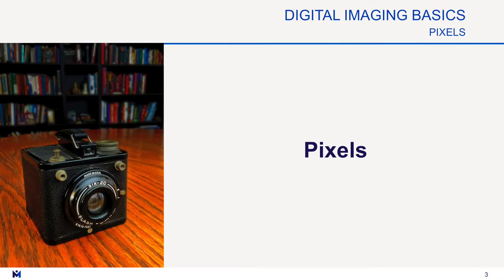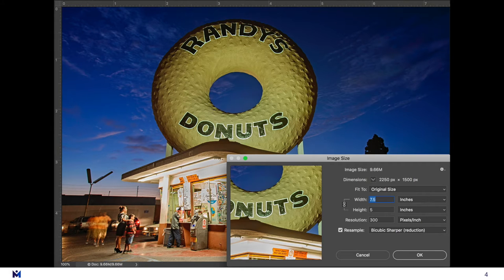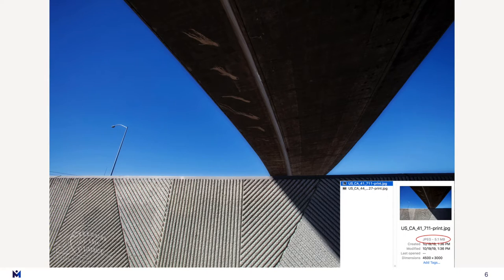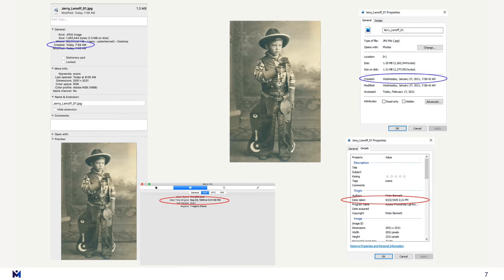We start off going through a lot of digital imaging basics — everything from what pixels are, to image resolution, file formats, image compression, and metadata.